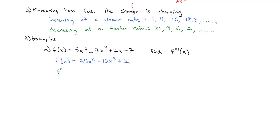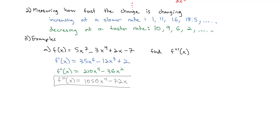To find the second derivative, we take the derivative of the first derivative. For 35x⁶, move the 6 out front to get 210x⁵; move the 3 out front to get minus 36x²; and the derivative of 2 is 0. For the third derivative, which is what we're looking for, move the 5 out front to get 1050x⁴ minus 72x, and that is our third derivative.